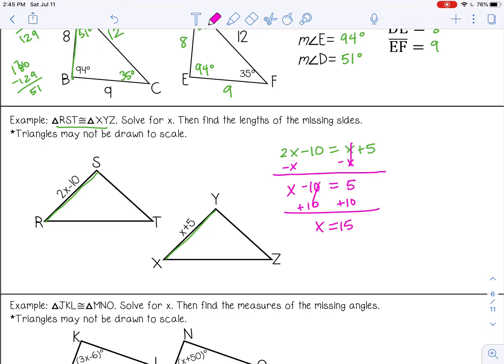So that is x. Now to find the lengths of the missing sides, we'll substitute 15 in for x for each expression. This one is x plus 5, so I can substitute x for 15 plus 5, which gives me 20. I'll do the same thing here, which will also give me 20. We know they have to be the same because they are congruent.